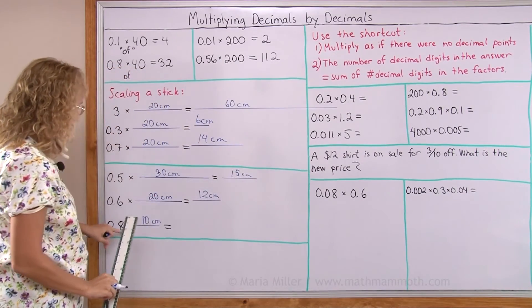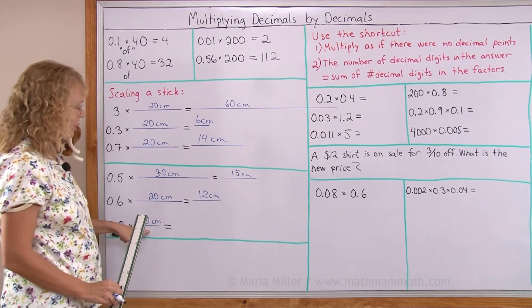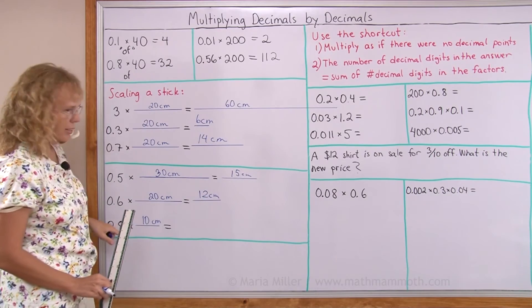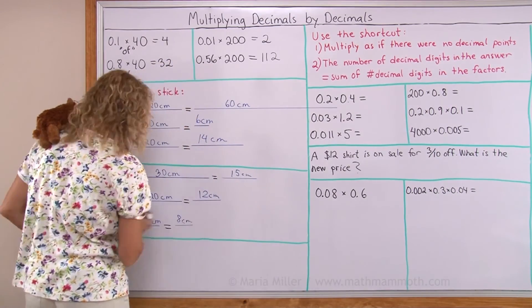And lastly 8 tenths of 10 centimeters. Think of 1 tenth. 1 tenth of this would be just 1 centimeter. So 8 tenths is 8 centimeters.